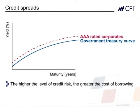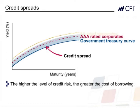AAA-rated companies have a slightly higher level of credit risk than US government Treasuries. Therefore, investors expect a slightly higher return when lending money to AAA companies rather than the US government. This is reflected in a slightly higher yield curve. The gap between the yield on a bond and the government yield curve is called the credit spread. As the credit risk of companies increases, the yield curve for those companies gets higher and higher.